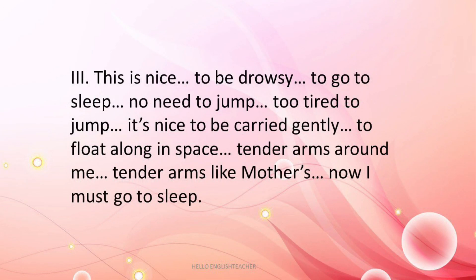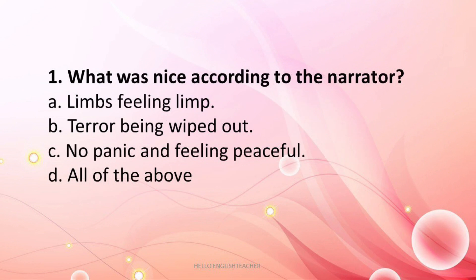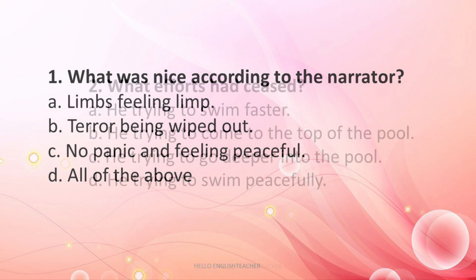Paragraph 3: 'This is nice to be drowsy. To go to sleep. No need to jump. Too tired to jump. It's nice to be carried gently. To float along in space. Tender arms around me. Tender arms like mother's. Now I must go to sleep.' Question 1: What was nice according to the narrator? The answer is all of the above — his limbs feeling limp, terror being wiped out, no panic, and feeling peaceful.